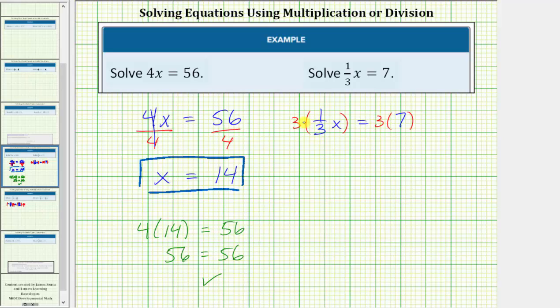Now because we have a fraction here, let's write 3 as 3 over 1. Well, 3 over 1 times 1 third is equal to 3 thirds or 1, and 1 times x is equal to x. So the left side simplifies to x equals, on the right side we have 3 times 7, which equals 21. The solution to the equation is x equals 21.